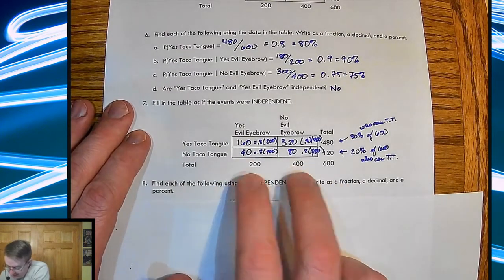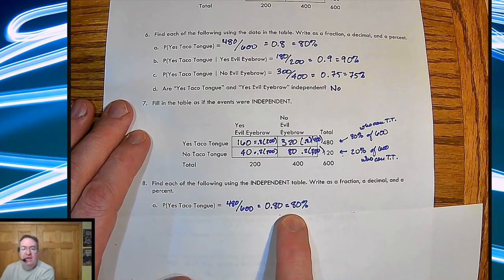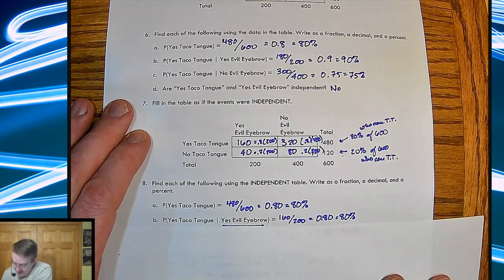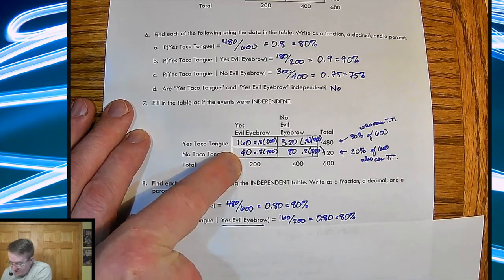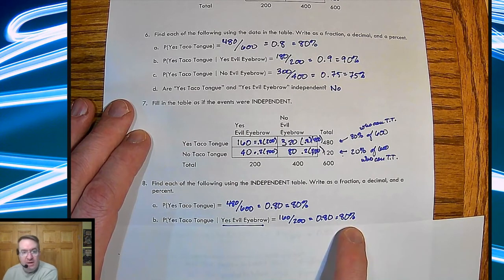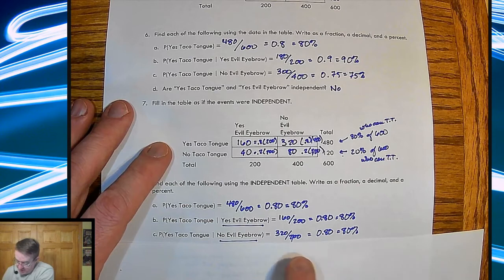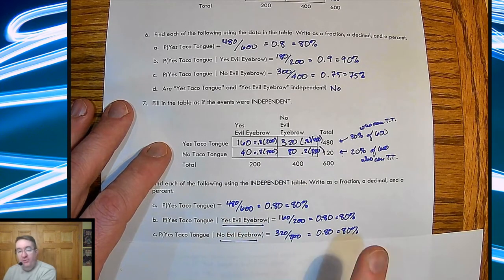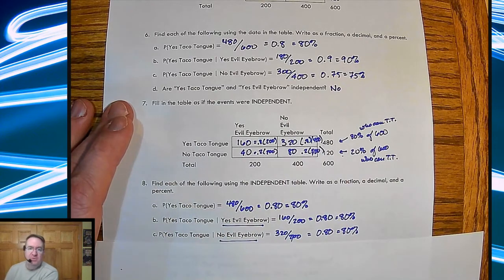All right. So if we're going to use the independent table, you're going to write a fraction, et cetera. So if it was independent, we'd be seeing 80%. That's the same as what we have up here. Taco tongue, yes, we have evil eyebrows. You're going to get 160 out of 200, which is also 80%. Taco tongue, no evil eyebrow, 320 out of 400. That's also 80%. So this is what it would look like if we did have independence between the two events.